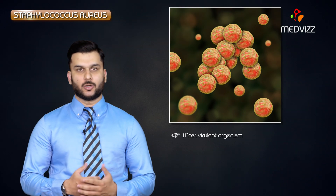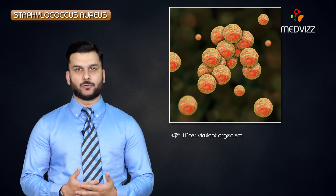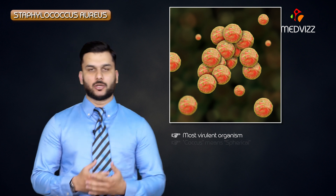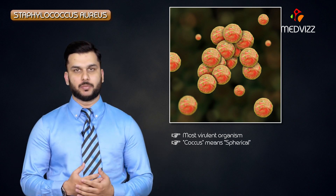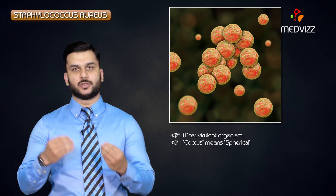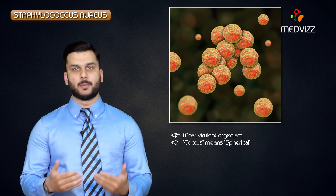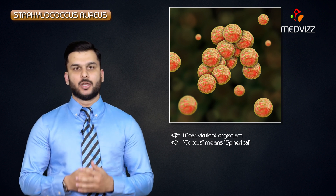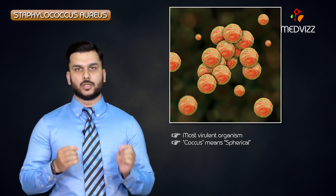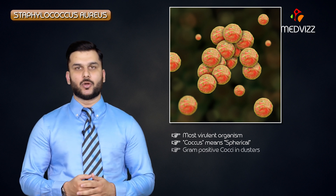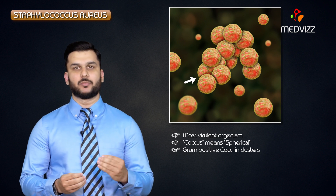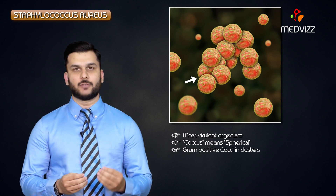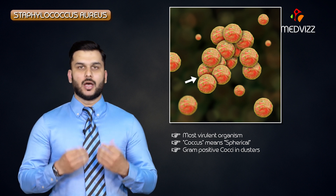Now let's talk about one of the most virulent organisms we know: Staphylococcus aureus. By 'coccus' we mean it is spherical in shape, which differentiates it from rods like bacilli. Staph aureus is a gram-positive cocci in clusters, which differentiates it from the streptococci, which occur in chains.